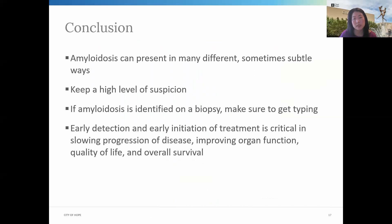As internists and even future subspecialists — whether that's cardiology, nephrology, GI, or hematology-oncology — it's really important to keep a wide differential and to keep amyloid in mind when trying to figure out what's going on with your patient. Maintain a high level of suspicion. And if amyloid is identified, make sure you get typing and determine if it's localized or systemic to help direct treatment.